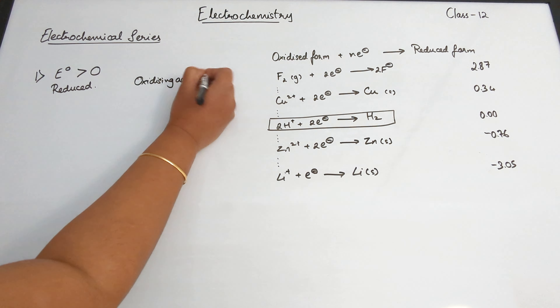The electrochemical series is an arrangement — and I know the table is significantly longer in your textbook, but these are the essential things I wanted to talk about in this video. An electrochemical series is basically the arrangement of the various electrodes in the increasing order of their standard electrode potential value.